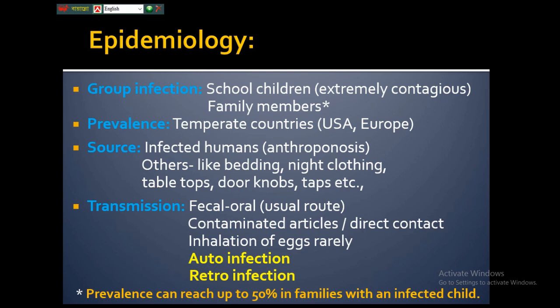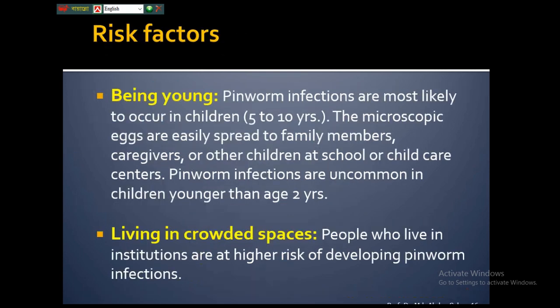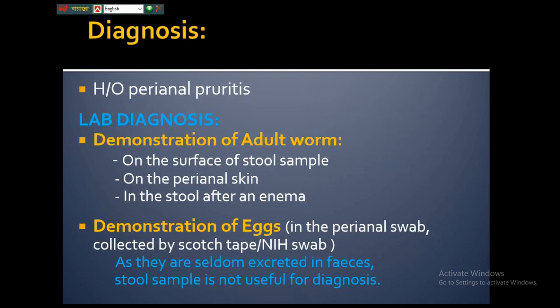The prevalence can reach up to 50 percent in families with an infected child. Risk factors include being young — most prevalent among children aged five to ten years, and uncommon below age two. Another risk factor is crowded spaces such as institutions, schools, and nurseries, where the highly contagious nature of the infection spreads more readily.